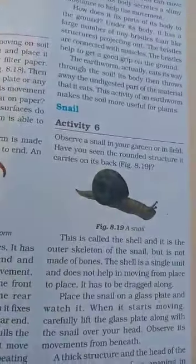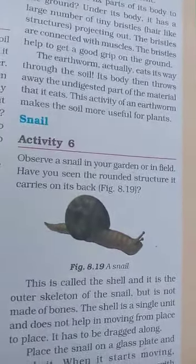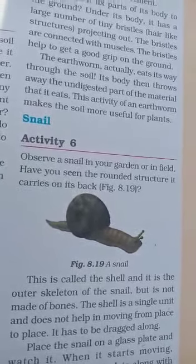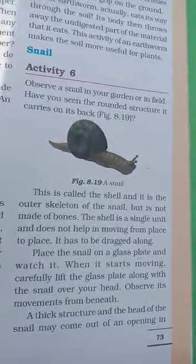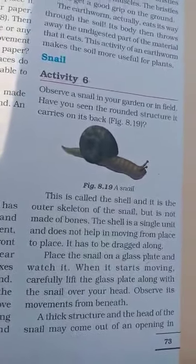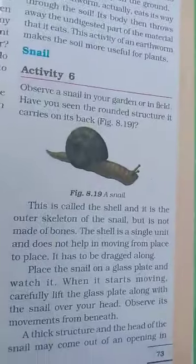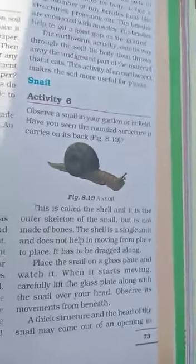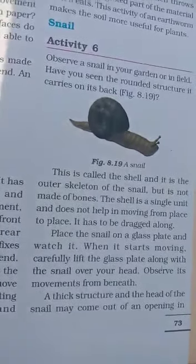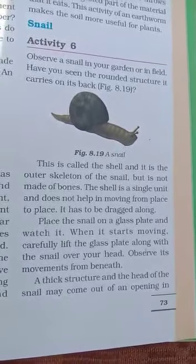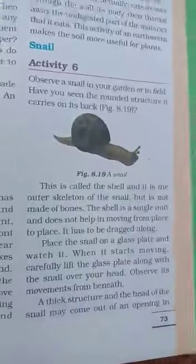The next organism is the snail. Observe a snail in your garden or in a field. Have you seen the rounded structure it carries on its back? That round shell-like structure is called the shell, and it is the outer skeleton of the snail. This shell is made up of calcium carbonate but is not made up of bone. Like the earthworm, the snail also does not have any bones. The shell is a single unit and does not help in moving from place to place.